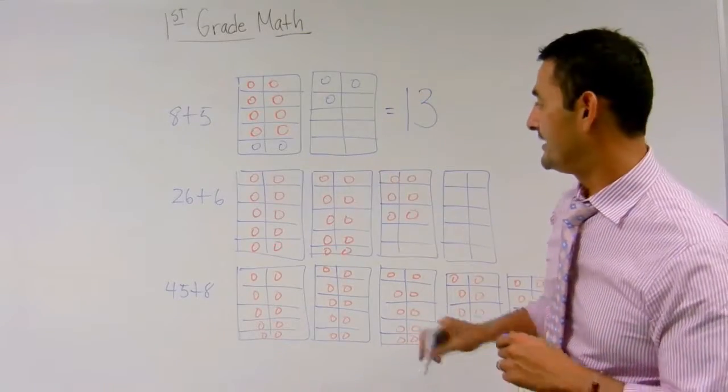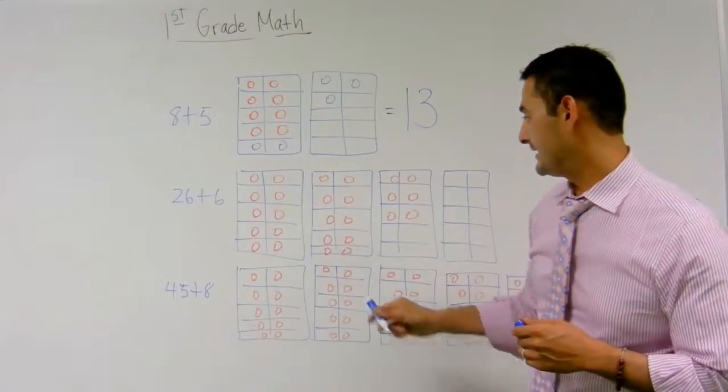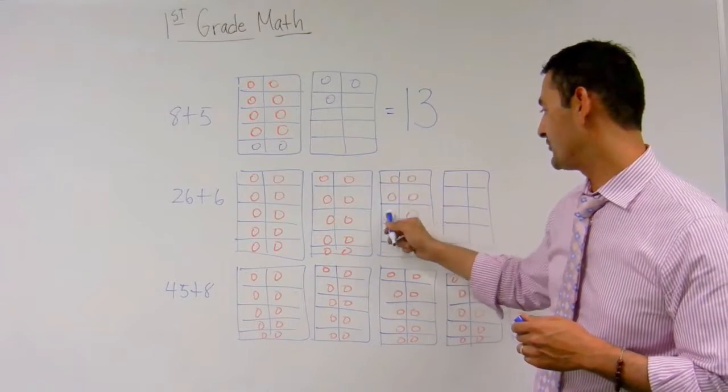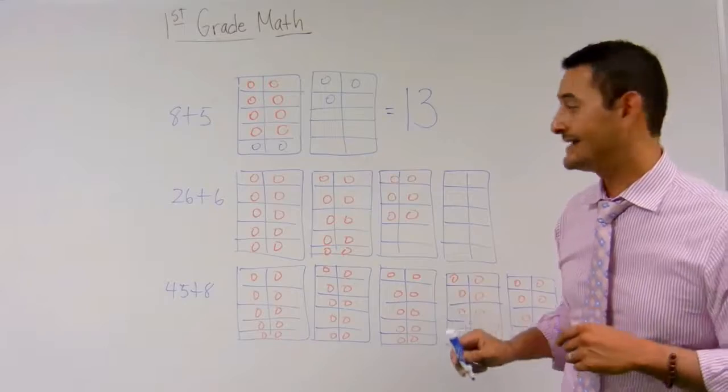Now let's take a look at the next one. Here I've got twenty-six plus six. Here I've got ten, twenty, twenty-one, twenty-two, twenty-three, twenty-four, twenty-five, twenty-six. Let's add six more.